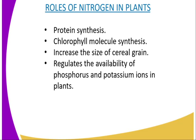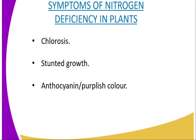Then we will go to the roles of nitrogen in the plant. The first role is protein synthesis in the plant. Number two, chlorophyll molecule formation — that is the green pigment which normally absorbs light energy during photosynthesis. And number three, it increases the size of the cereal grain, for example wheat and maize. Once you apply nitrogen as fertilizer, the size of the grain also increases. It also regulates the availability of phosphorus and potassium ions to the plant, making sure that potassium and phosphorus are well absorbed.